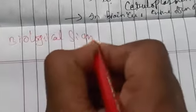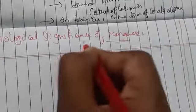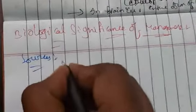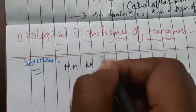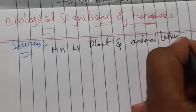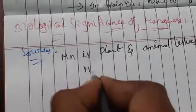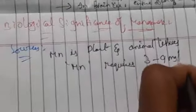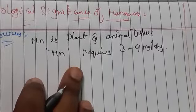Biological significance of manganese. Manganese is generally present in plant and animal tissues. A human generally requires 3 to 9 milligrams of manganese per day, or up to 15 milligrams.